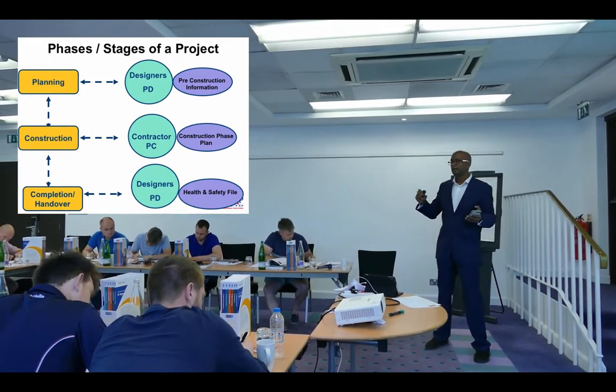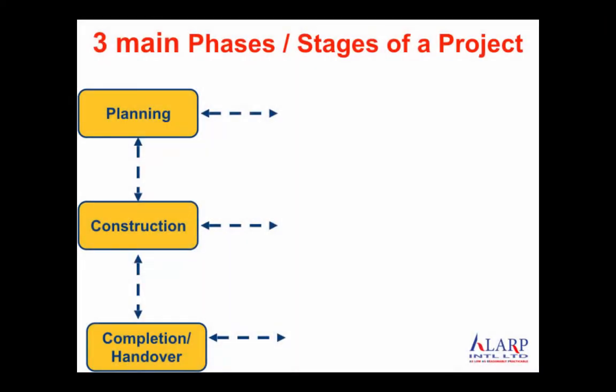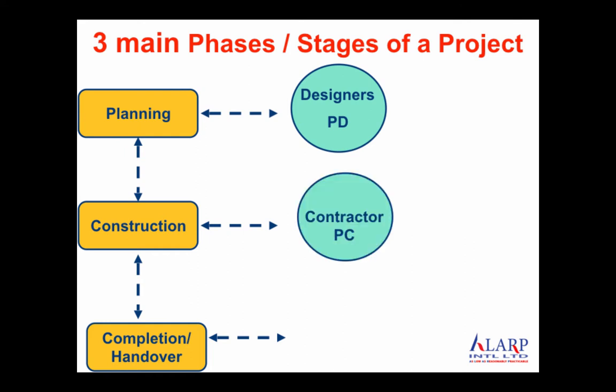The first document — pre-construction information — is managed by the principal designer. The construction phase plan is at the second level, managed by the principal contractor. The last one, the health and safety file, goes back to the principal designer. So who actually prepares each document? Pre-construction information: principal designer. Construction phase plan: principal contractor. Health and safety file: principal designer — unless the principal designer moves on, in which case they hand the baton to the PC.